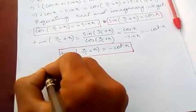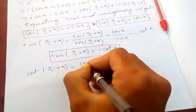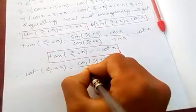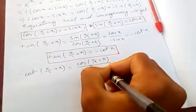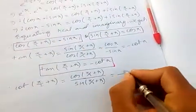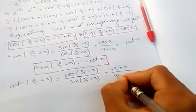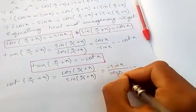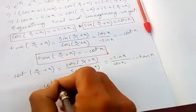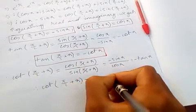Now let's prove cot(90°+x). We know cot(x) = cos/sin, so cot(π/2 + x) = cos(π/2 + x) / sin(90°+x) = (-sin(x)) / cos(x). Since sin/cos = tan(x), therefore cot(π/2 + x) = -tan(x).